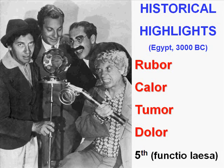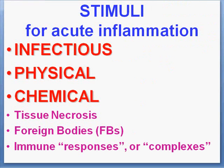Now that we learned the relationship between the four cardinal signs of inflammation and the four Marx Brothers, let's talk about the stimuli for acute inflammation.